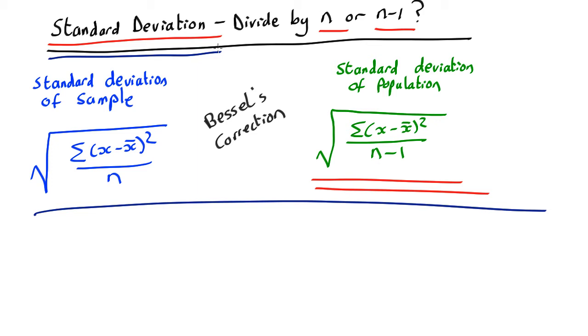When you've got n large, like a hundred, the difference between 1 over the square root of n and 1 over the square root of n minus 1 is tiny. So it makes very little difference to the answer, and almost certainly there are other effects which are much more important.